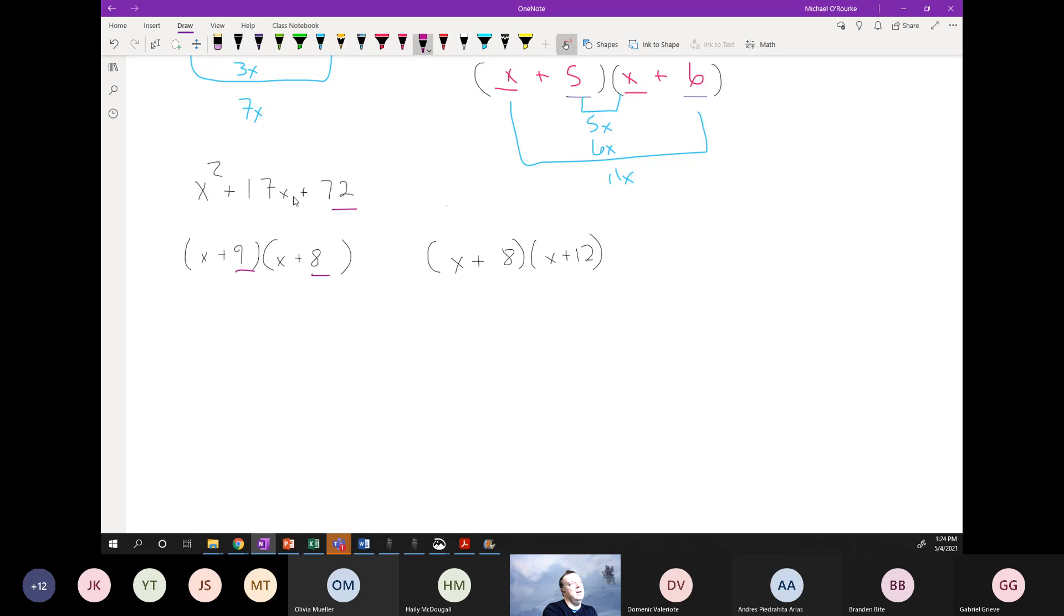Where 8 times 12 is not 72, so you can kind of do your own checks. Like as I'm doing this, this is me checking it, right? So that times that equals that. Then you do your addition part. This times this equals 9x. This is 8x. That, if you add those up, equals 17x. So we have that, and these two times together equal that. Perfect.